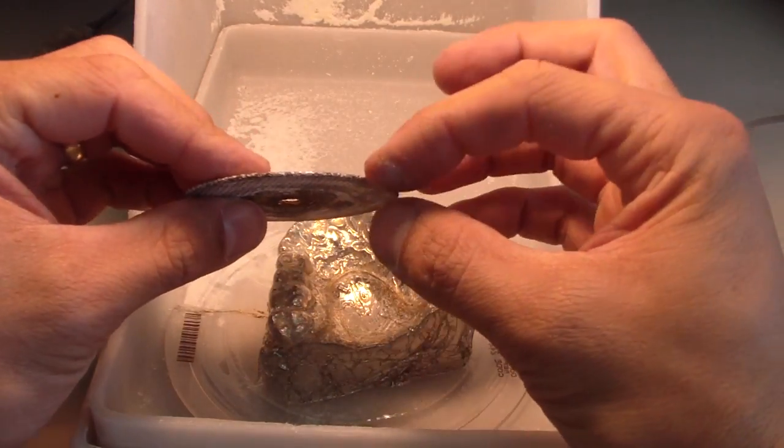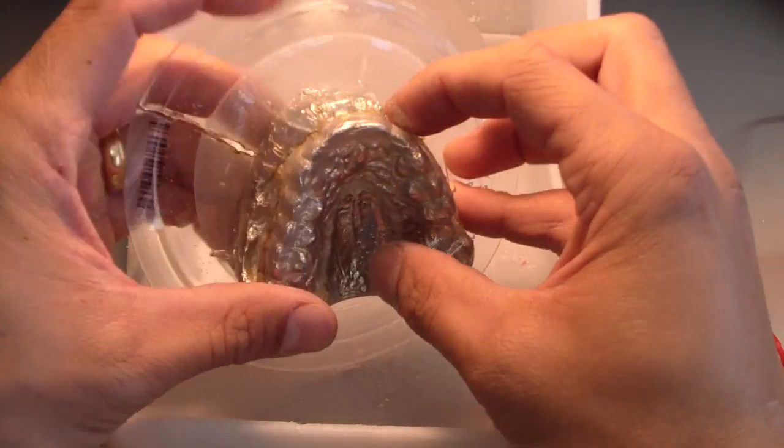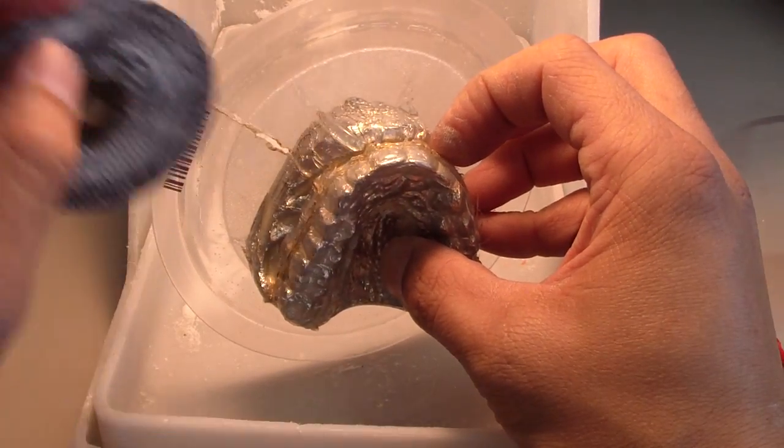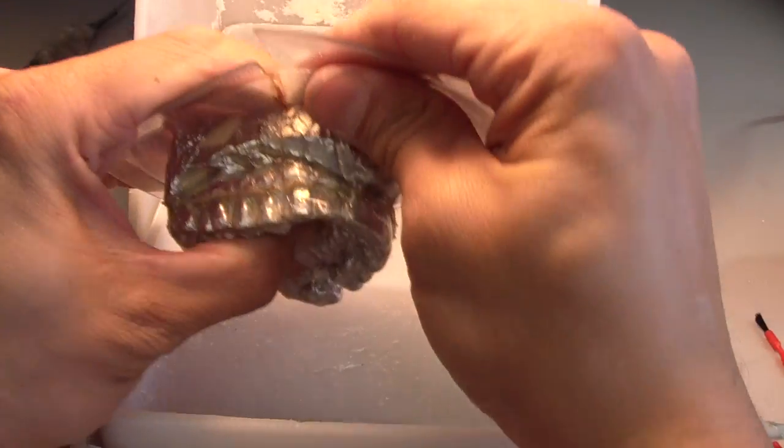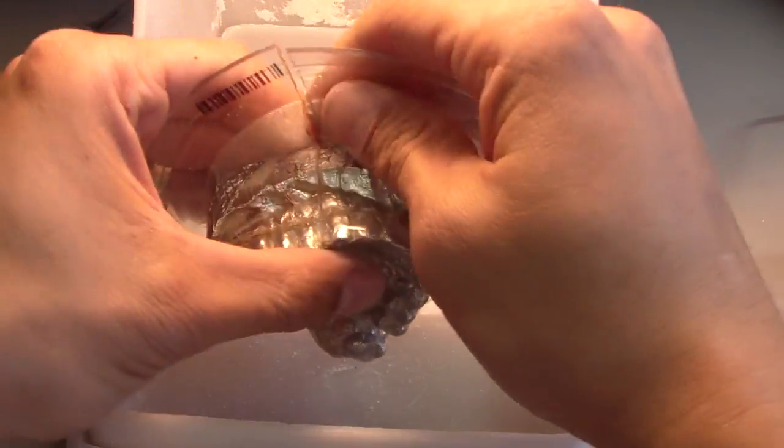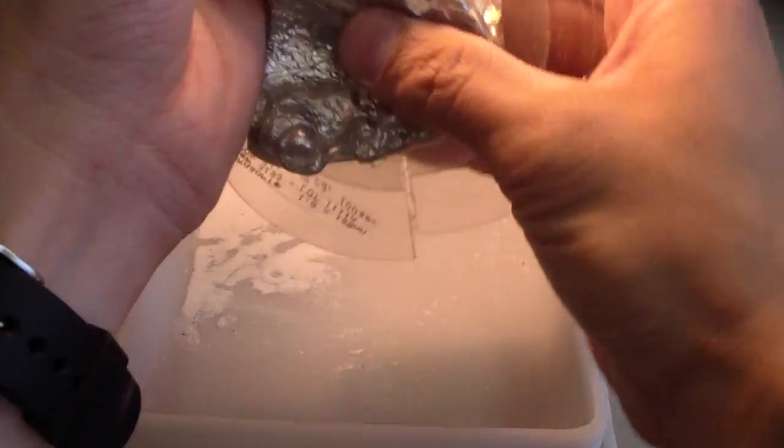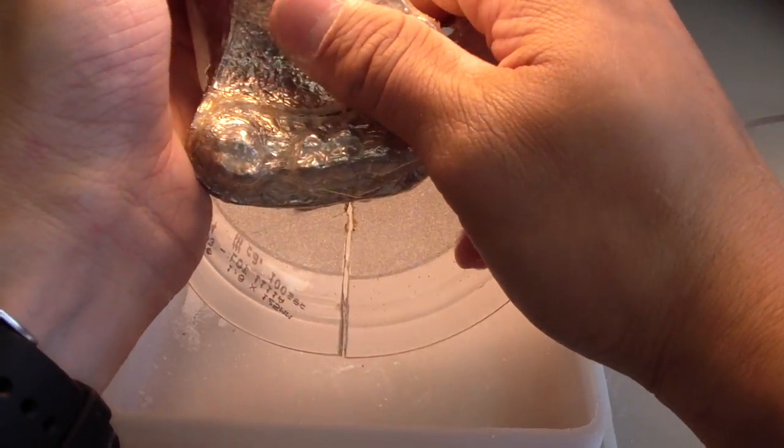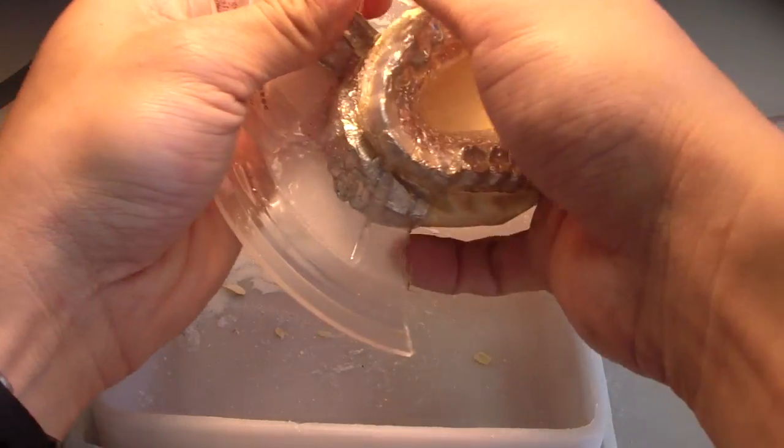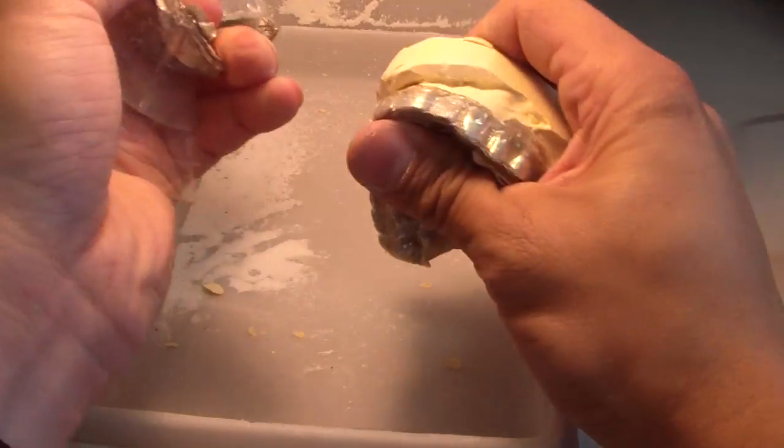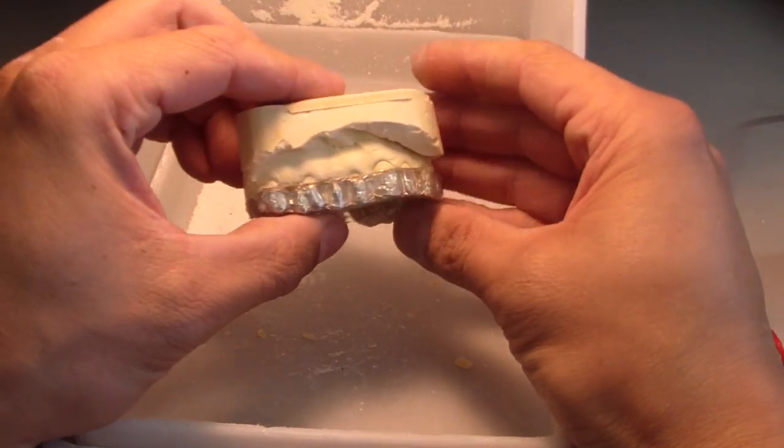The problem with using the electric knife is if you want to preserve the cast, this will section right through it pretty quick if you're not careful. You're still going to cause some destruction to the cast with the electric knife, but less than other methods. That's what we're left with.